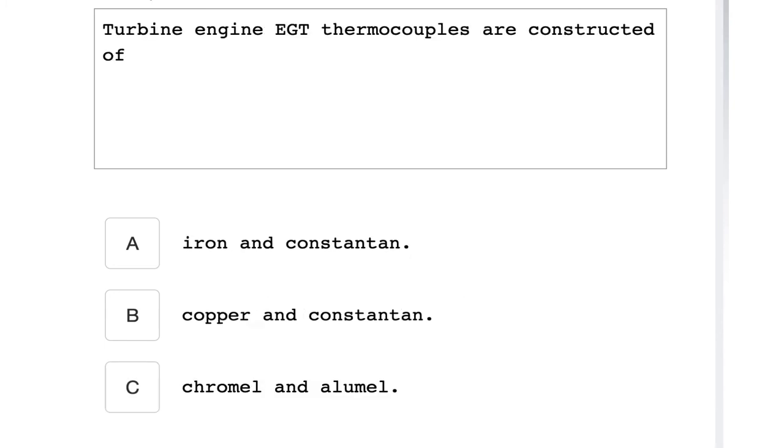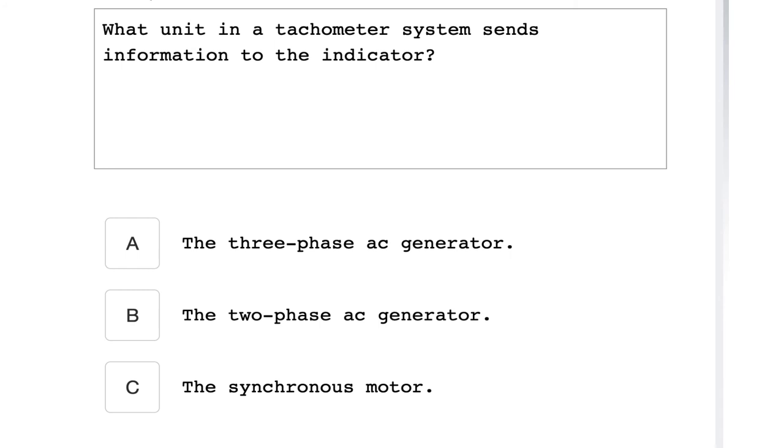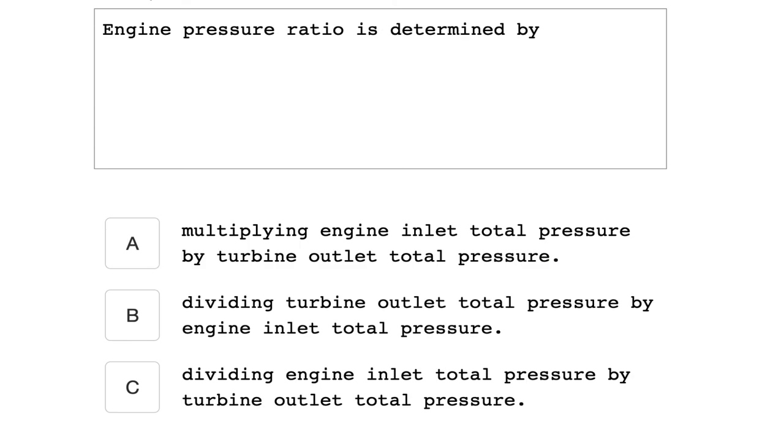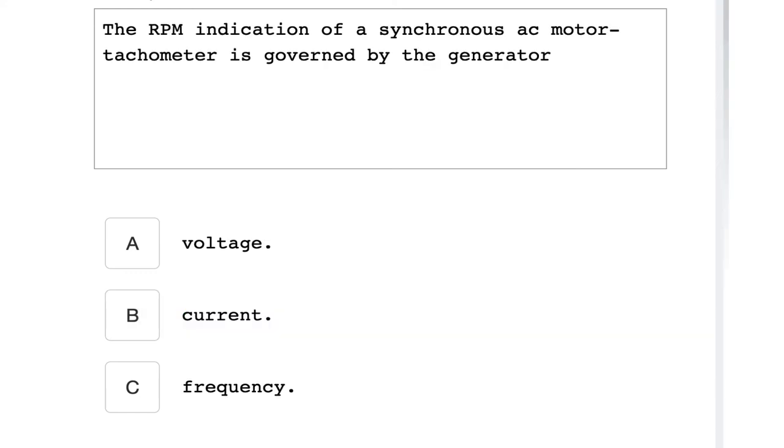Turbine engine EGT thermocouples are constructed of chromel and alumel. What unit in a tachometer system sends information to the indicator? The three-phase AC generator. Engine pressure ratio is determined by dividing turbine outlet total pressure by engine inlet total pressure. The RPM indication of a synchronous AC motor tachometer is governed by the generator frequency.